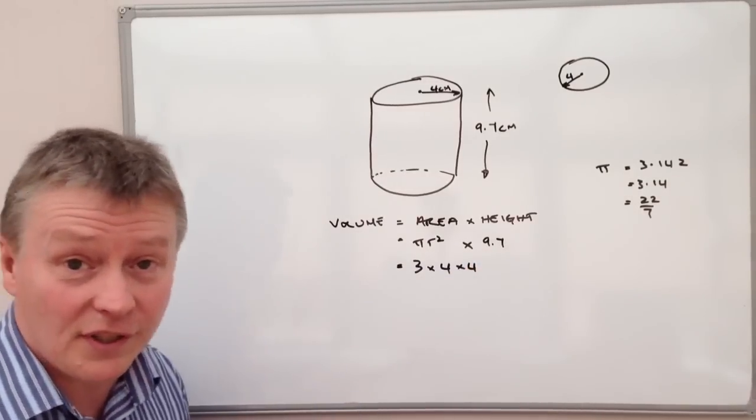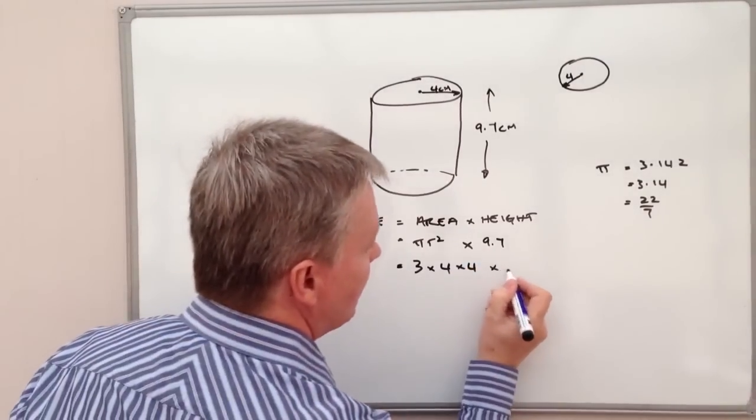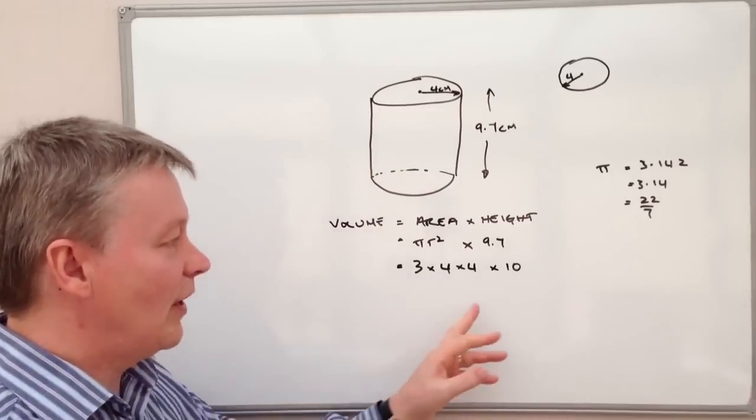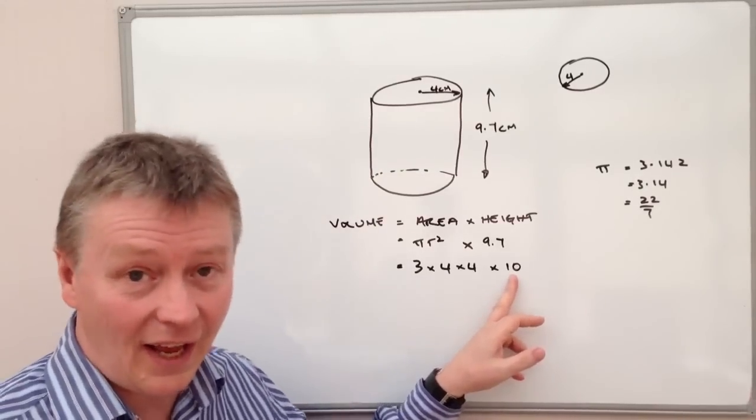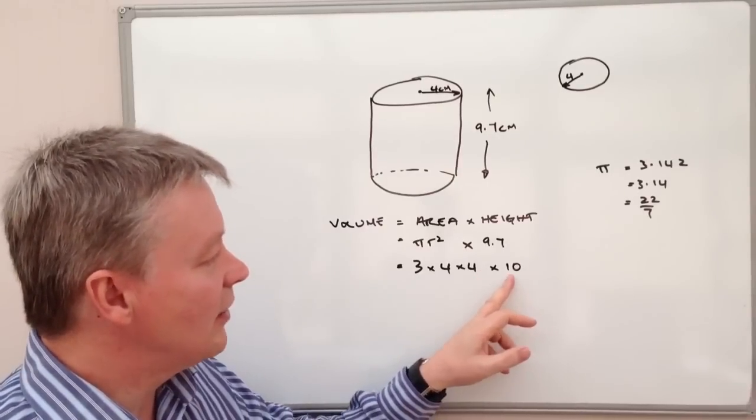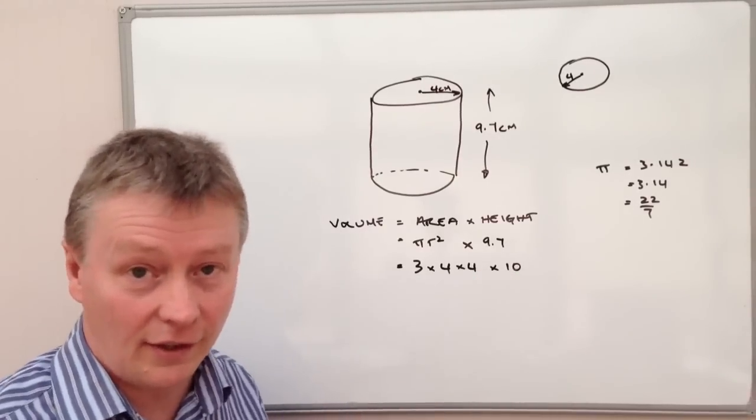And then height, well it's 9.7 so I'm going to call it 10. Because I know that if I multiply something by 10, then all I really need to do is just add a 0 to the end of my calculation.